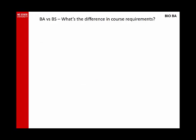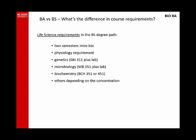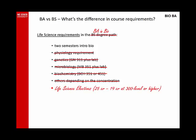Moving on to course requirements in the life sciences, here is what those look like in the BS in Biological Sciences. For the BA in Biology, we cut some specific course requirements without reducing the overall number of life science credit hours. In particular, courses like Genetics, Microbiology, and Biochemistry all moved from being requirements to being electives on the life science electives list.